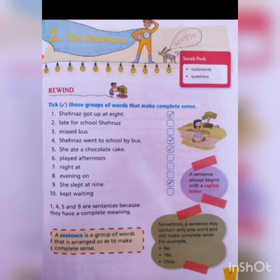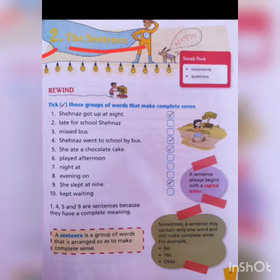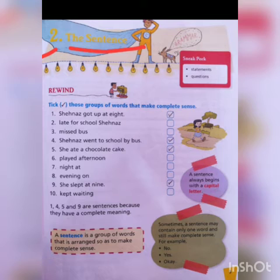Chapter number 2 — and what is the chapter name? Chapter name is 'The Sentence.' So, first of all we need to understand: what is a sentence? A group of words that make a complete sense is called a sentence.